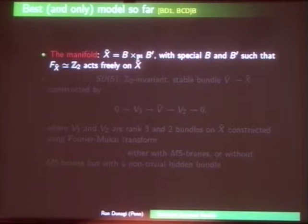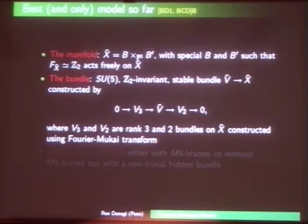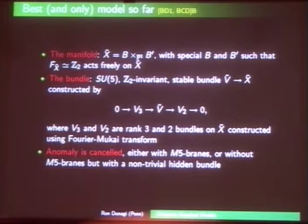The model we do have is based on this threefold with fundamental group Z2. The bundle is an SU-5 bundle — an extension of a rank-2 bundle by a rank-3 bundle. Each individual piece is constructed by a Fourier-Mukai transform, and we find the right invariant stable extension. To cancel the anomaly, you can use heterotic M-theory by putting M5-branes in the bulk, or move them all to the hidden brane with simple stable bundles — so this works as either a perturbative or non-perturbative model.